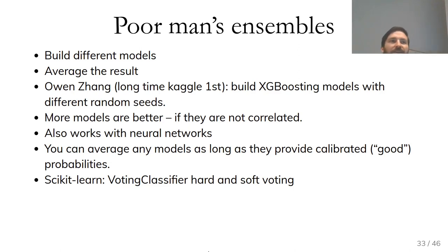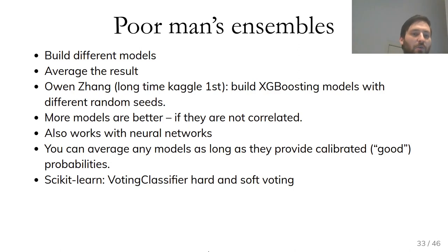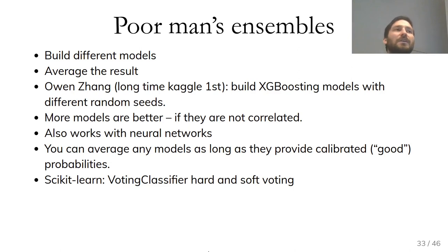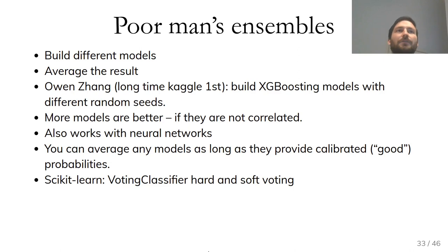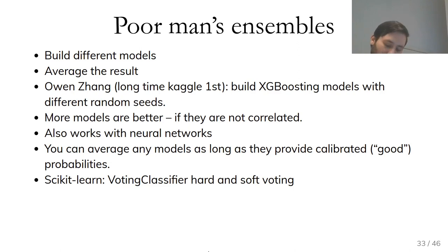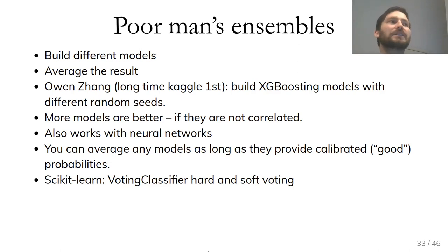The simplest ensemble is just building different models and averaging the results — what I call prompt ensembles. One way to win Kaggle competitions is to build several XGBoost models with different random states and average the results. You can do this with neural networks too — most top submissions for image classification are many different models averaged together. You can prove easily that if each model is better than chance and they make different mistakes, averaging them makes things better.